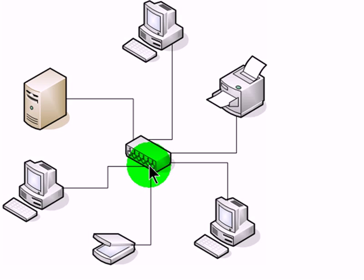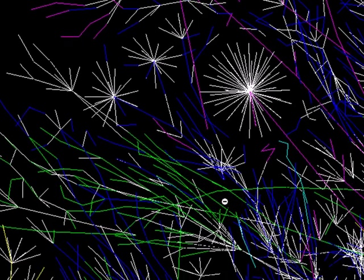The internet takes us to a much grander scale. The internet is thousands and thousands of these computer networks all across the world connected together. And they're connected together physically — made up of cables, computers, hardware devices, routers, and switches. So the internet is a real physical thing.